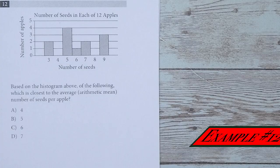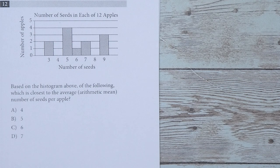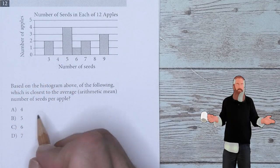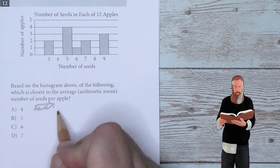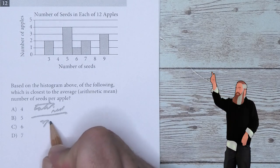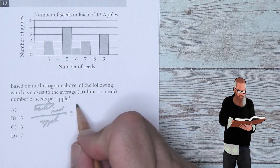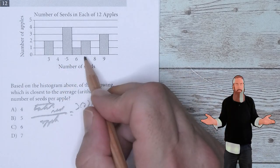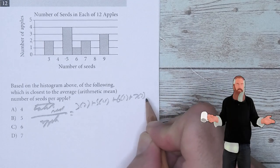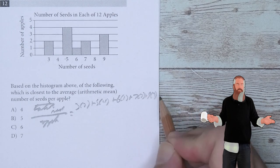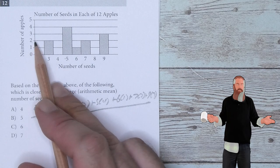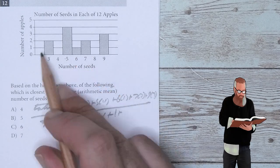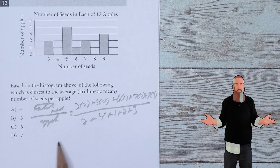Based on this histogram above, which is the closest to the average, the arithmetic mean number of seeds per apple? We want to know the total number of seeds divided by the number of apples. This is going to give us 3 times 2 plus 5 times 4 plus 6 times 1 plus 7 times 2 plus 9 times 3.